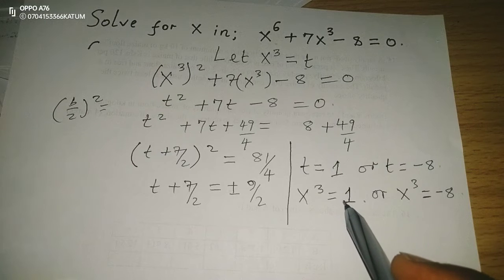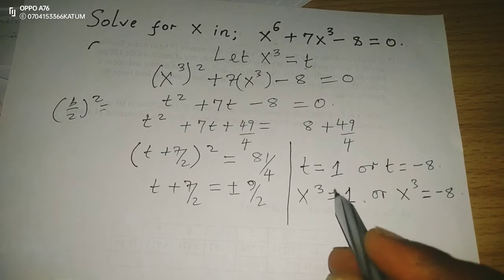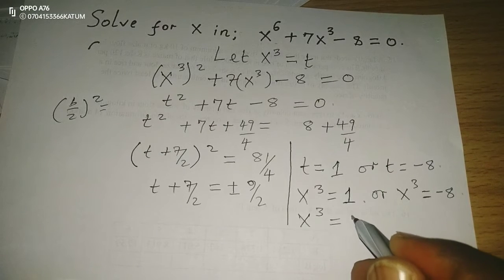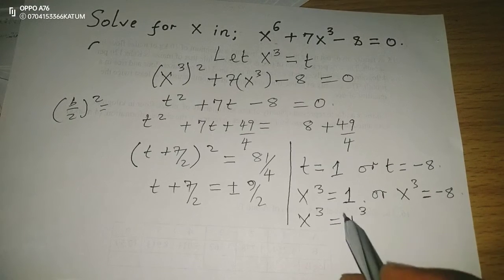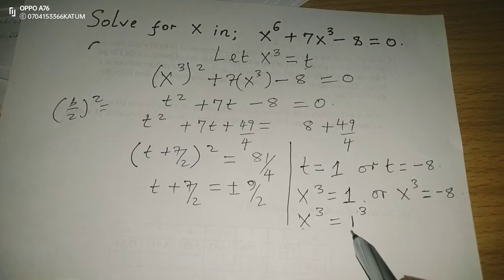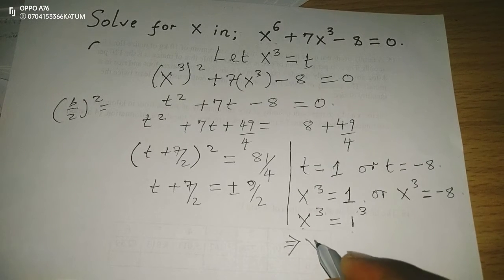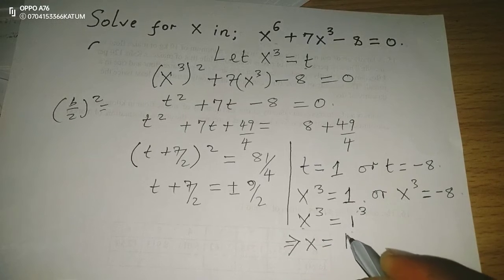we can express both sides to the same base, or make both sides have the same power, whereby x^3 in the first term equals 1^3. Now that the powers are the same, it means we can equate the bases, whereby we can conclude that x is equivalent to 1.